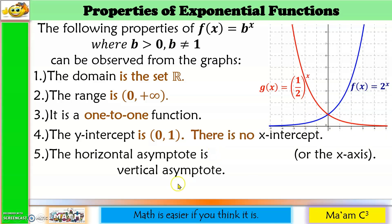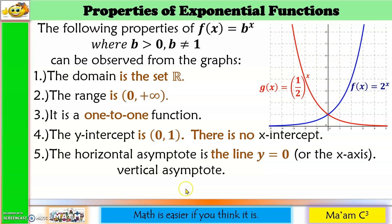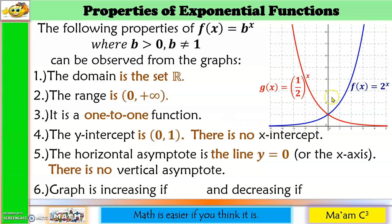For the horizontal asymptote: the x-axis serves as the horizontal asymptote — the graphs get closer and closer to it but never touch it. The equation of the x-axis is y = 0. For the vertical asymptote: since the graphs just go wider and wider, there is no vertical asymptote. The graph is increasing when the base is greater than 1, and decreasing when the base is less than 1 but greater than 0.